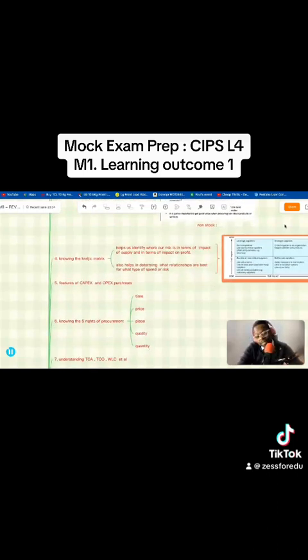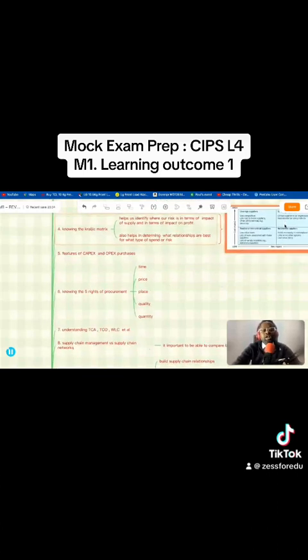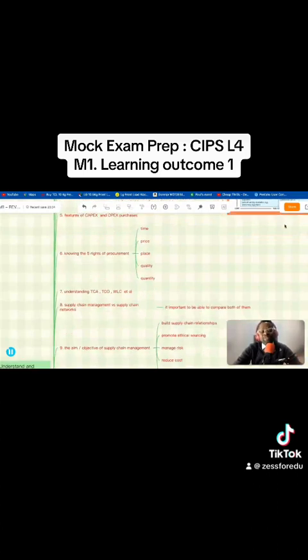Point number six: knowing the five rights of procurement. Yes, you can be tested on that. Point number seven: understanding total cost of acquisition, total cost of ownership, whole life costing. They appear to be similar - total cost of ownership and whole life costing - but there are some differences in terms of where they are used. TCO used more in the acquisition of assets and whole life costing more in construction. Check it out, it's in your study guide.